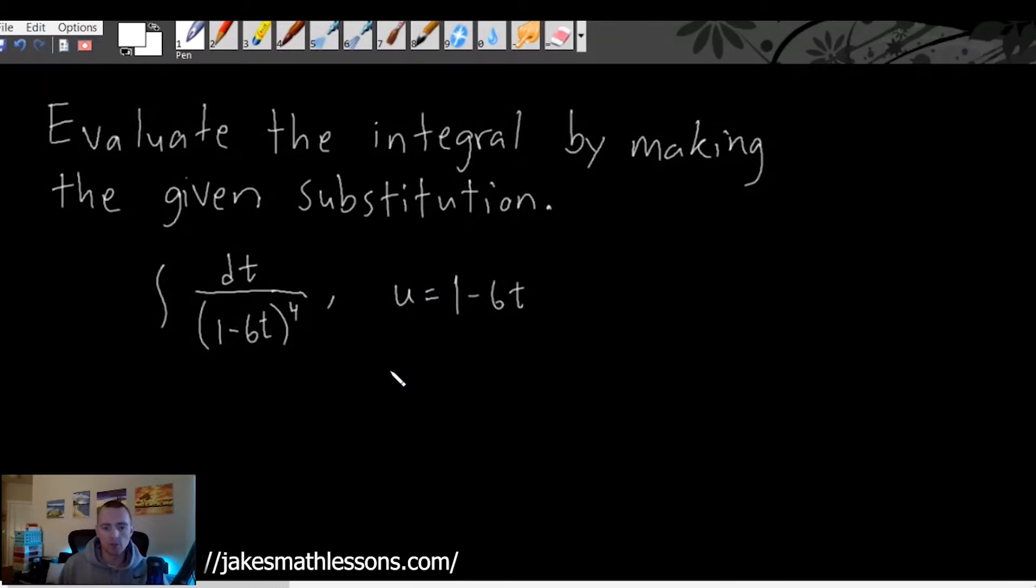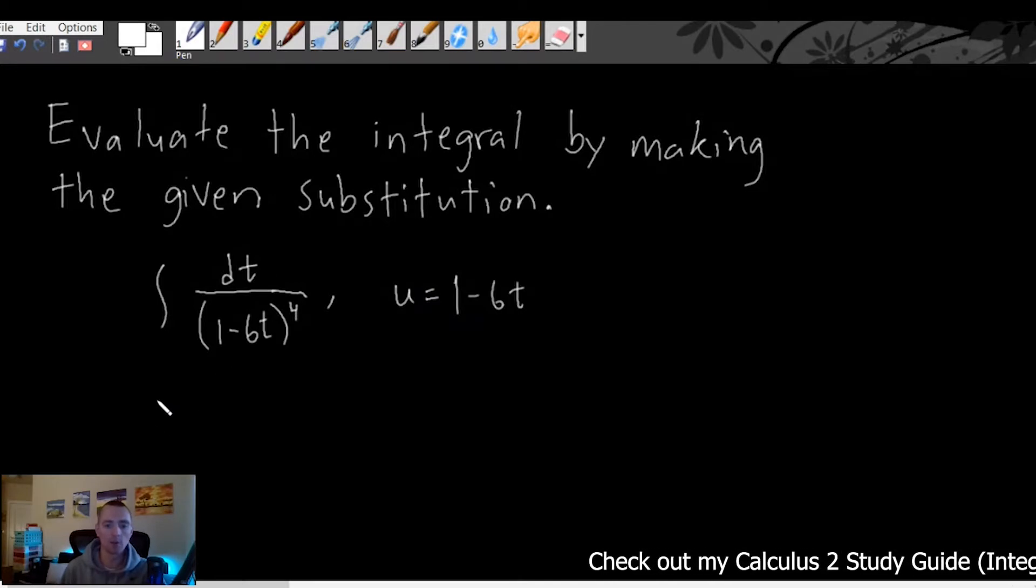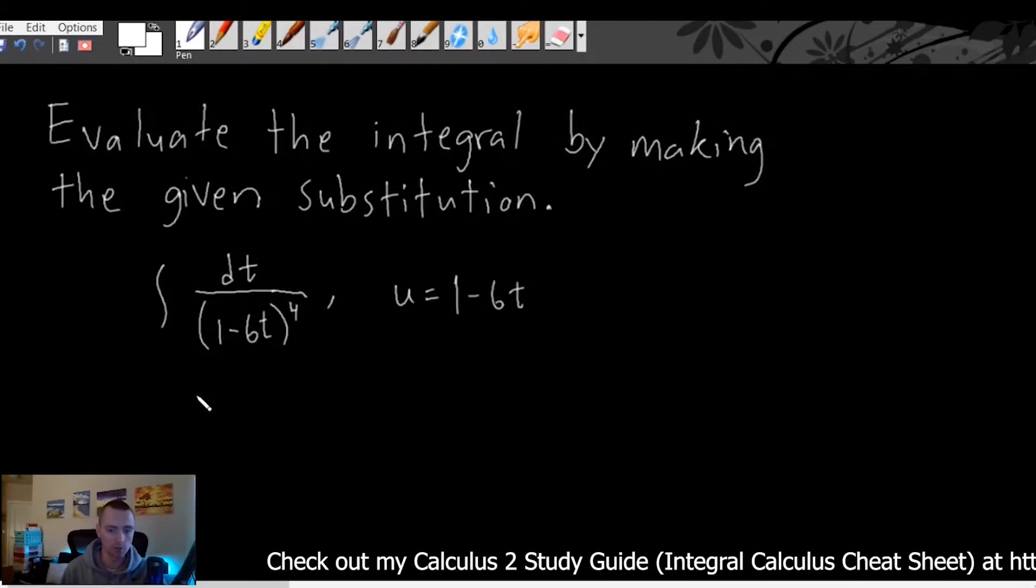So with U substitution, in general the first step is figuring out what the substitution you're going to make is. In this case that's already been given so that definitely does help alleviate the difficulty of U substitution. The next example I'm going to be getting into I'm going to spend some more time talking about how to figure out what substitution to make. But for this example here that's given, so really we can just skip ahead to the actual substitution part of U substitution problems.